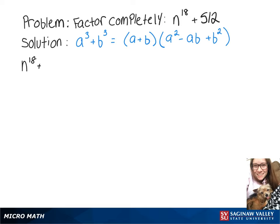So we're going to rewrite that as n to the 6th cubed plus the cube root of 512, which would be 8. So 8 cubed is the same thing as 512.